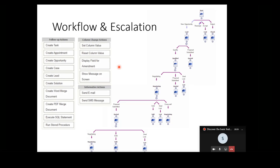As users advance from one stage to the next, the workflow can invoke a series of actions, reactions, notifications, and requests for data collection. For example, as we advance from one stage to the next, we might be asked to populate a mandatory field. We might have an approximate forecasted value for the opportunity - at the lead stage perhaps we don't know the value because we haven't qualified it yet, but when we progress to the qualified stage there's an assumption we have some sense of its worth. So we make that field mandatory at that point in time.